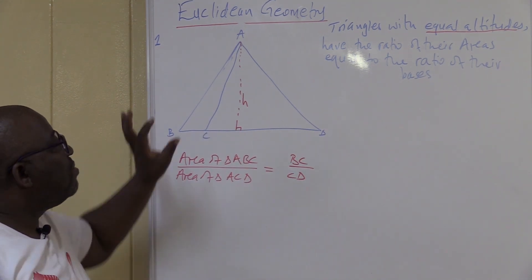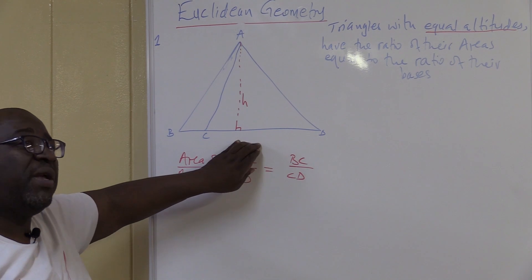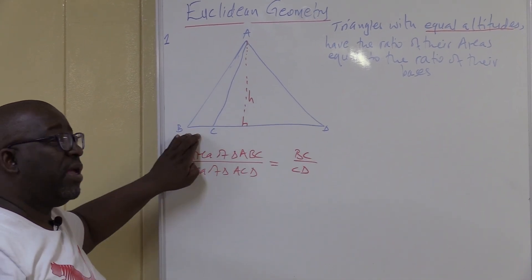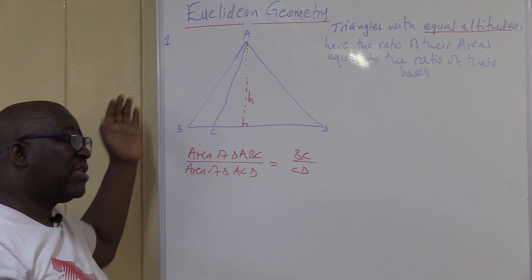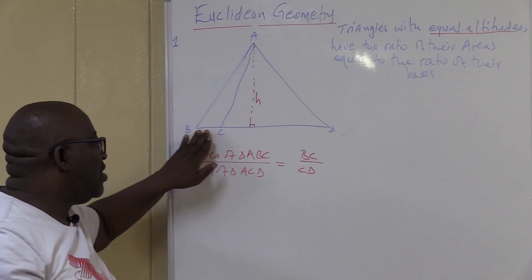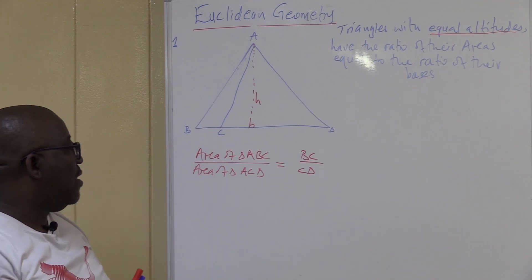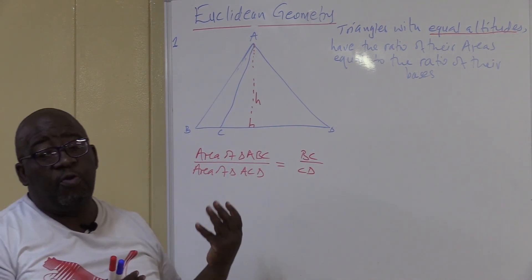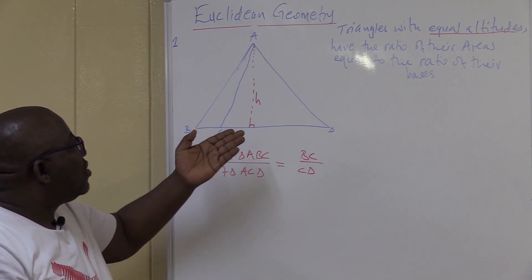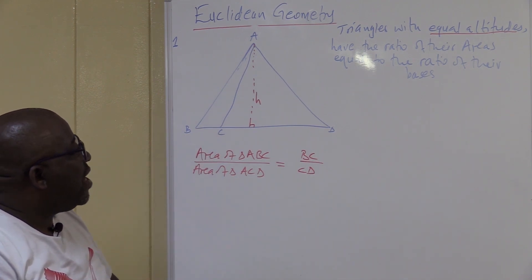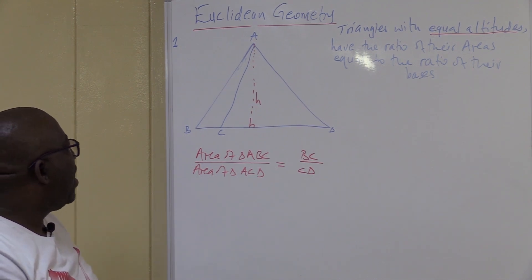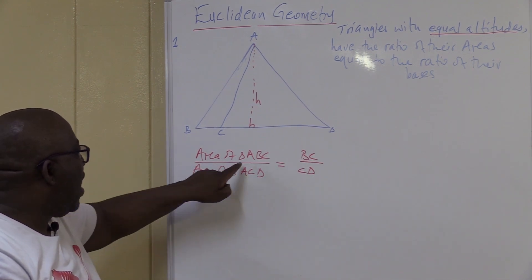You must not mix them. If you start with this area, you start with this base. This area over that area equals this base over that base. If you start the other side, that area over this area equals that base over this base. Now let's prove whether this is true. Area of triangle ABC over area of triangle ACD — we're taking the left hand side and want to prove it equals the right hand side.